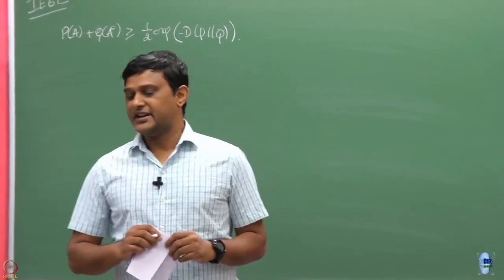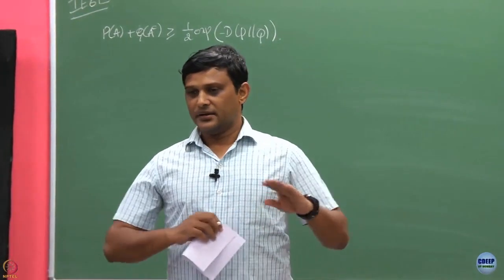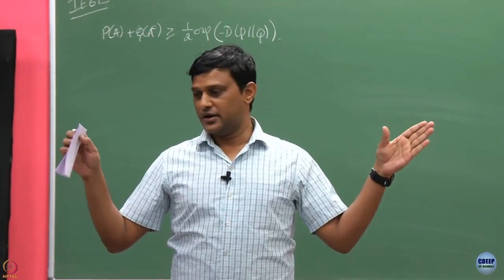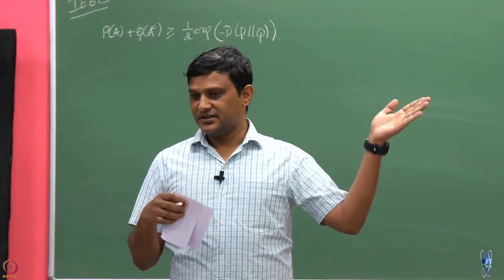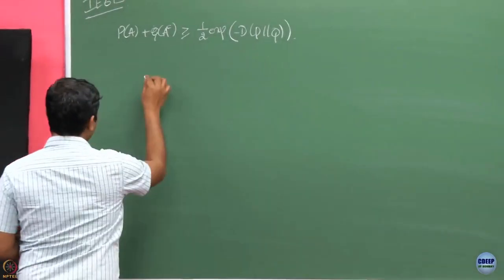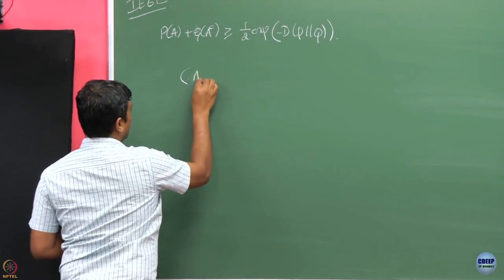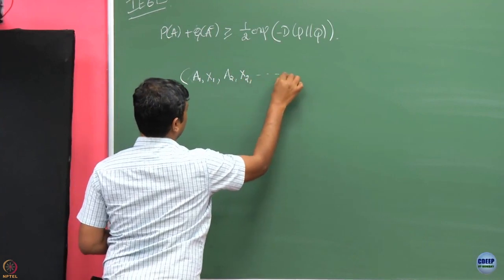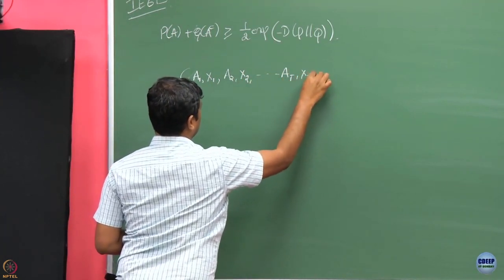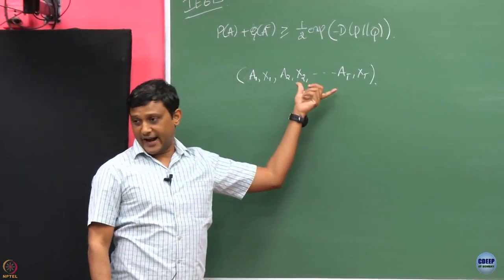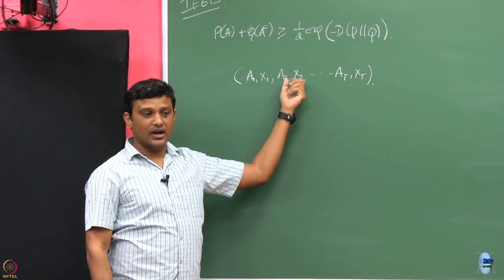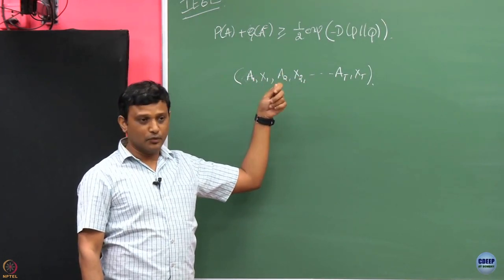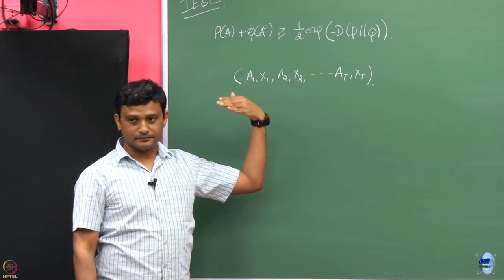There is an environment and there is a learner. Let us fix a policy of a learner, call it π. When you interact with the environment, that interaction is going to induce a distribution on the way actions and rewards are drawn. If you play action A1 in round 1, you observe reward X1, then play A2, observe X2, and so on up to round T. The X1, X2, ..., XT are random reward samples and A1, A2, ... are the arms pulled, which are themselves random since each arm pull is induced by prior observations.